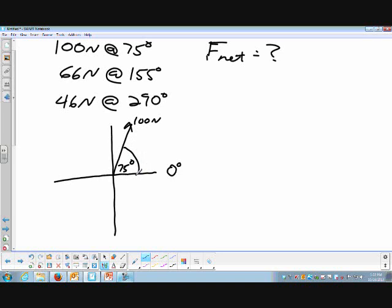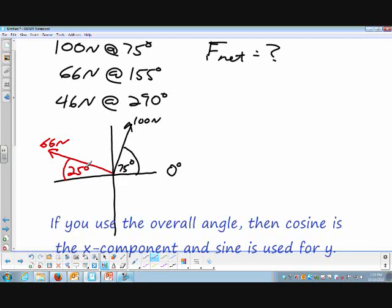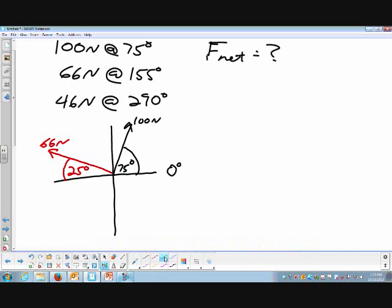The 66 newtons at 155 degrees would actually be someplace over here. And I'm not going to plot the 155 degrees. What I'm going to mark is this angle right here, which is 25 degrees, 180 minus 155, because I'm going to set up my triangle based on that angle. And then the 46 newtons at 290 degrees would put it down around here, 46 newtons. And again, I'm going to be interested in that angle, which is actually just 20 degrees. That makes the math a lot easier.